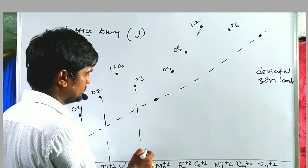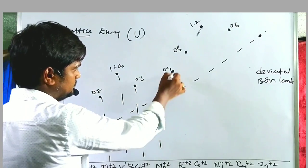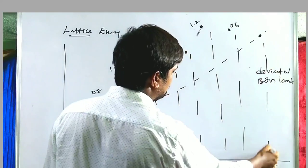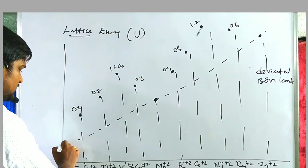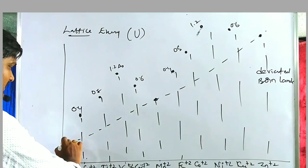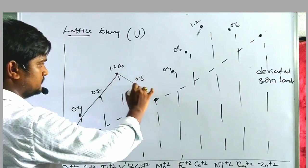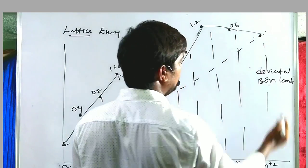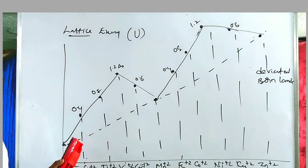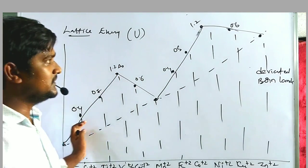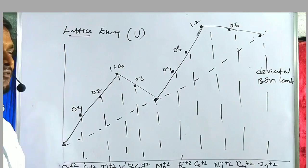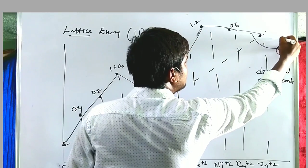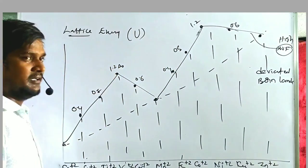When we connect all those points on the graph, we get a double-humped curve, like the previous hydration energy curve. This belongs to the weak field — that means high spin complexes. When it belongs to strong field complexes — low spin — the CFSE values are different. In case of low spin: D1, D2, D3 CFSE values remain the same as high spin, but from D4 onward they change.